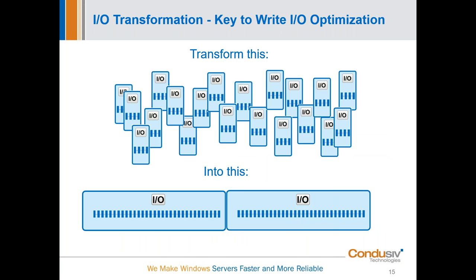I wanted to touch on one more point about how important this concept of IO transformation is. What we want to have happen: we take those split, small, random IOs and transform them into contiguous, larger, sequential IOs. That is the key in getting back 30% to 40% of your throughput. Your hardware should be able to perform faster than it does today, but the way Windows is handling the data logically, it's like Windows has its foot on the brake. Think of Velocity as pressing down on the accelerator — you're driving this hot rod Maserati.